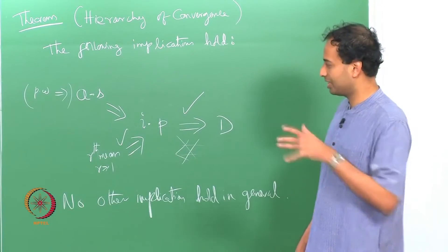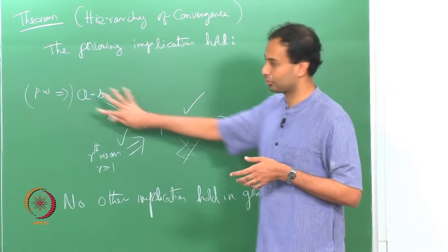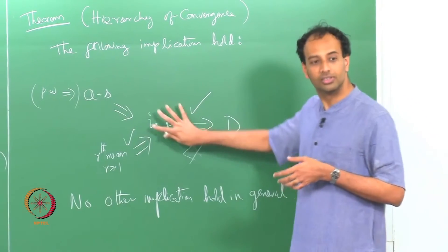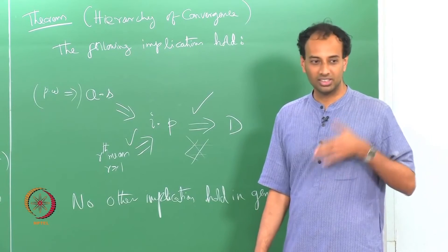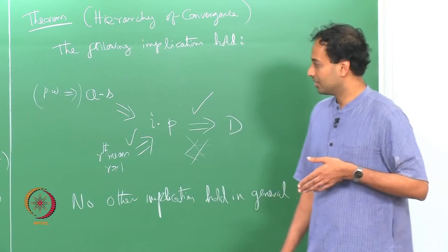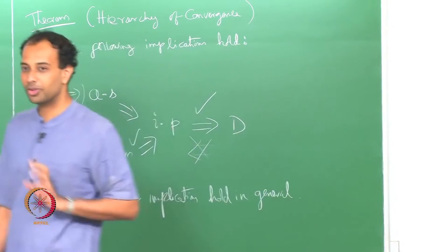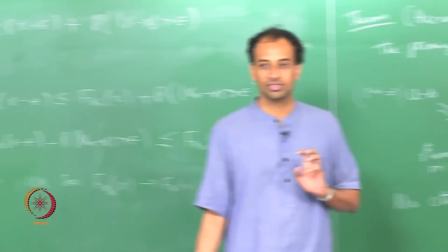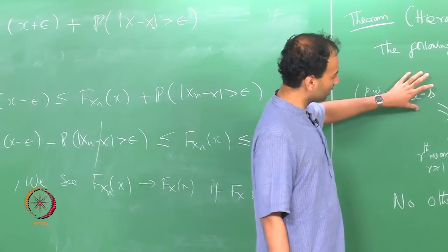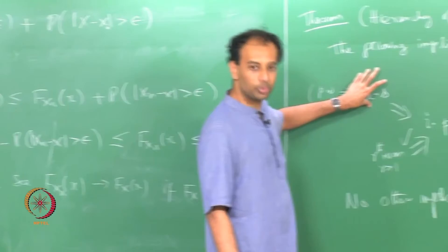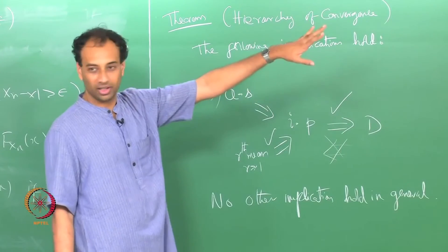The real conceptual subtleties come in the difference between almost sure convergence and convergence in probability. Almost sure convergence says the probability of ω for which X_n(ω) converges to X(ω) equals 1.